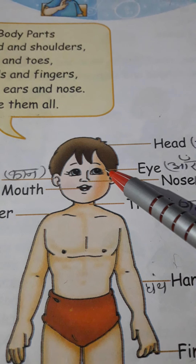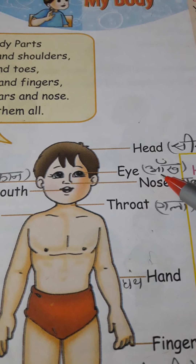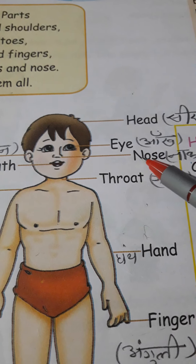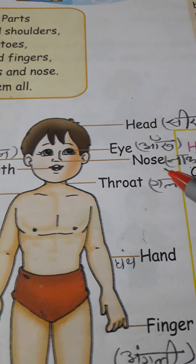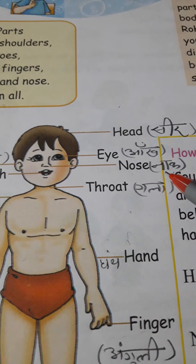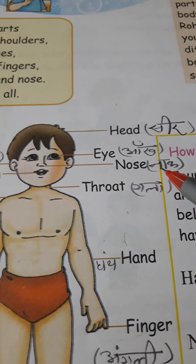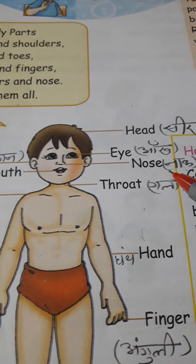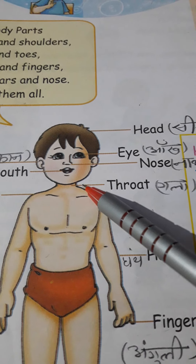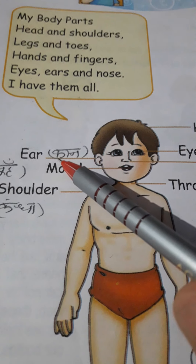Doosra hai 'eye' — E-Y-E. Eye means aankh. Aap ke paas kitni aankhen hain? Two. And 'nose' — naak. Naak. Well.